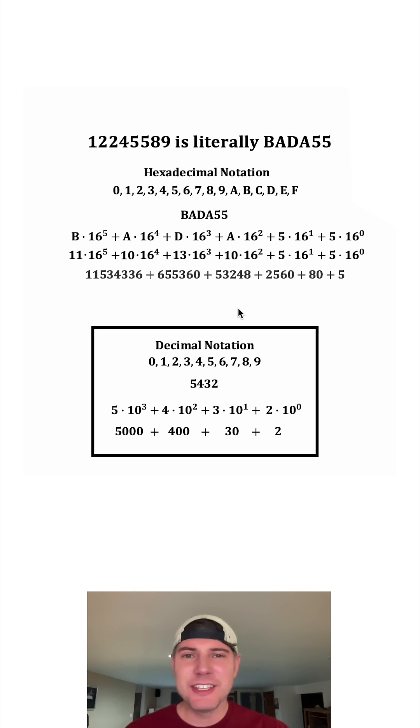And then we can multiply all these and add them all together. It ends up being 12,245,589. This number in decimal is this number in hexadecimal. How exciting.